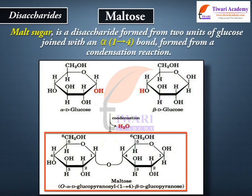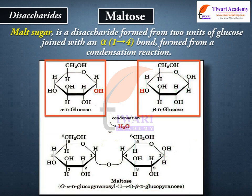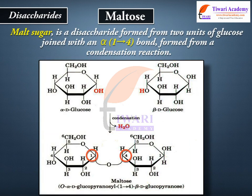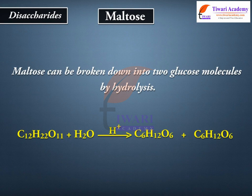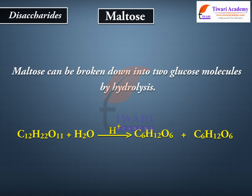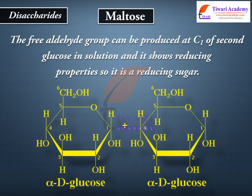Maltose (malt sugar) is a disaccharide formed from two units of glucose joined with an alpha-1,4 bond, formed from a condensation reaction. Maltose can be broken down into two glucose molecules by hydrolysis: C₁₂H₂₂O₁₁ + H₂O → C₆H₁₂O₆ + C₆H₁₂O₆. The free aldehyde group can be produced at C1 of the second glucose in solution, so it shows reducing properties and is a reducing sugar.